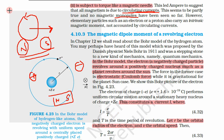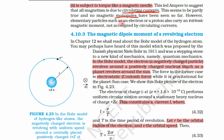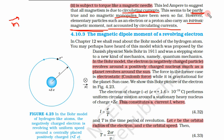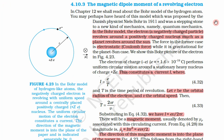However, elementary particles such as electrons and protons carry an intrinsic magnetic moment. This magnetic moment is not accounted for by circulating currents. That is why Ampere's statement is only partly true — all other magnetism is due to circulating currents, but small particles like electrons and protons carry some intrinsic magnetic moment of their own.